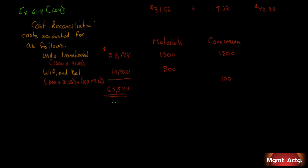That is the last line of a production report. The cost reconciliation gives us the value of the units transferred — since this is the first processing department, it will leave and enter the second processing department's work in process inventory. The ending balance of $10,400 sets up our beginning balance for the next period. That's 6.4 — and now you've seen the entire production report through 6.2, 6.3, and 6.4.